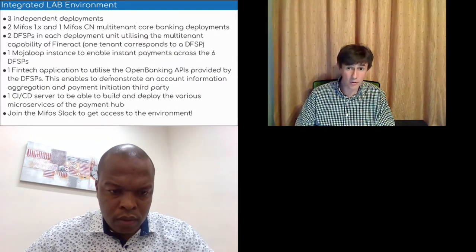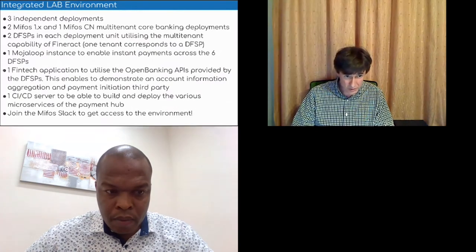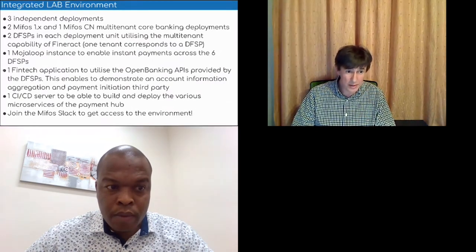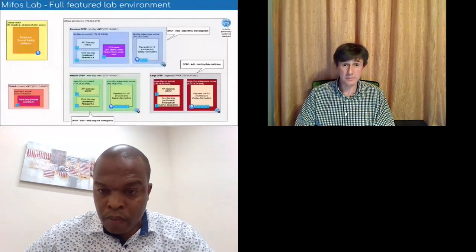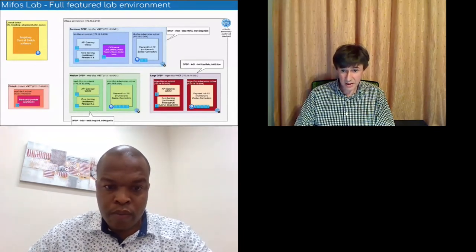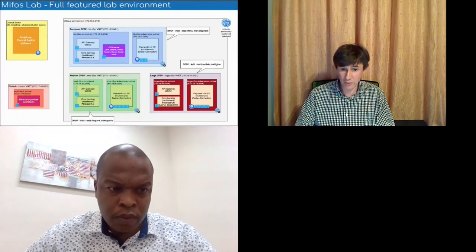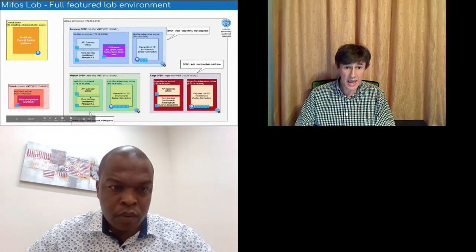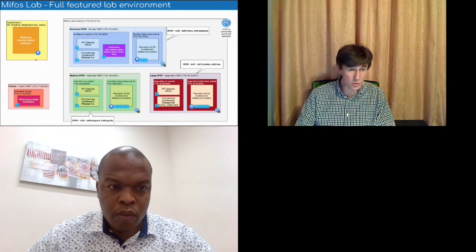The lab environment is a sandbox that is up and running. It has Fineract CN and 1.x, the payment hub in both deployment modes, each having two different tenants — ensuring the whole solution supports multiple tenants. We added an API gateway and opened up Open Banking API services: account information, account history, and payment initiation services. Customers can log into a FinTech, access tenants via these API gateways to get account information or initiate a payment that goes to the payment hub. The lab is on Azure with three independent deployments with tenants named rhino, elephant, buffalo, lion, leopard, and gorilla, plus a FinTech instance, API gateway, and the payment hub connecting all systems together with the Mojaloop hub.